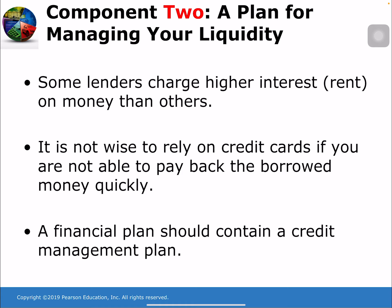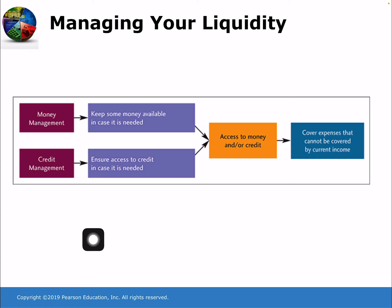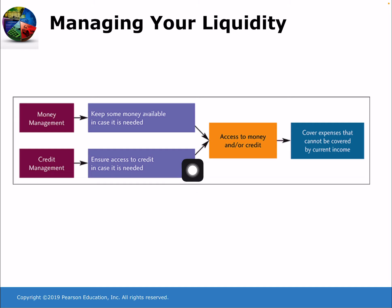A financial plan should contain a credit management plan. That might include limiting the number of credit cards you have or capping the amount of credit you use at any given time. Managing liquidity can be summarized with two tools: money management, where you keep some money available in case it's needed, and credit management, which ensures access to credit if you need it. Together, access to money and credit will help cover expenses that cannot be covered by current income.